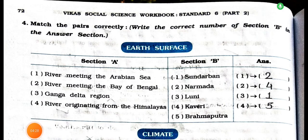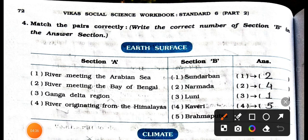Now see the next page. Main 4: match the pairs correctly. Write the correct number of section B in the answer section. Earth surface, section A: number 1, river meeting the Arabian Sea; number 2, river meeting the Bay of Bengal; number 3, Ganga delta region; number 4, river originating from the Himalayas. Section B: number 1, Sundarban; number 2, Narmada; number 3, Luni; number 4, Kaveri; number 5, Brahmaputra.